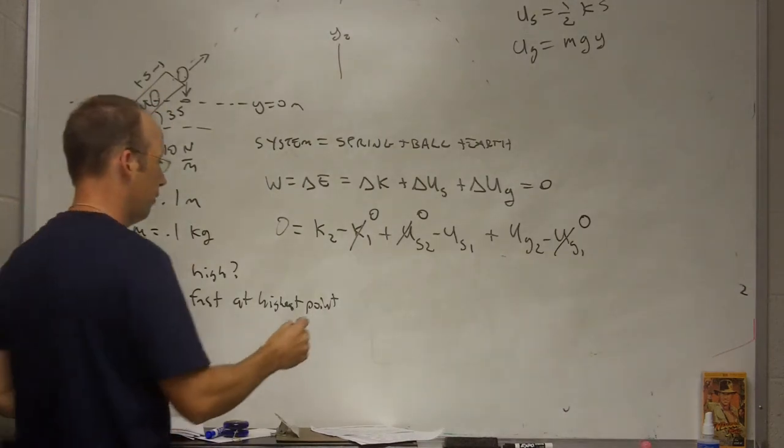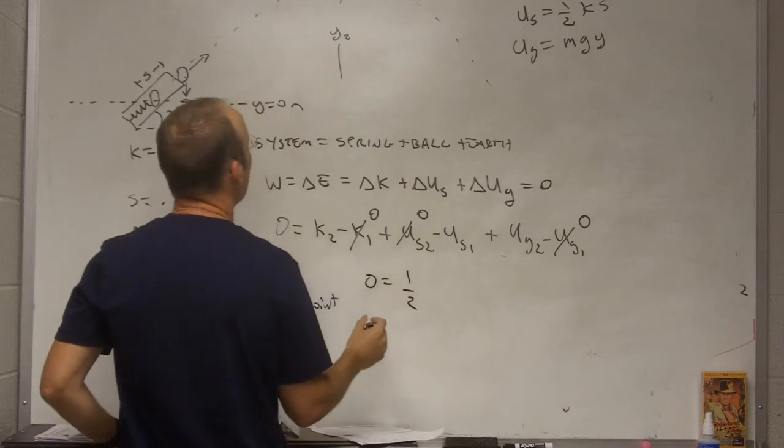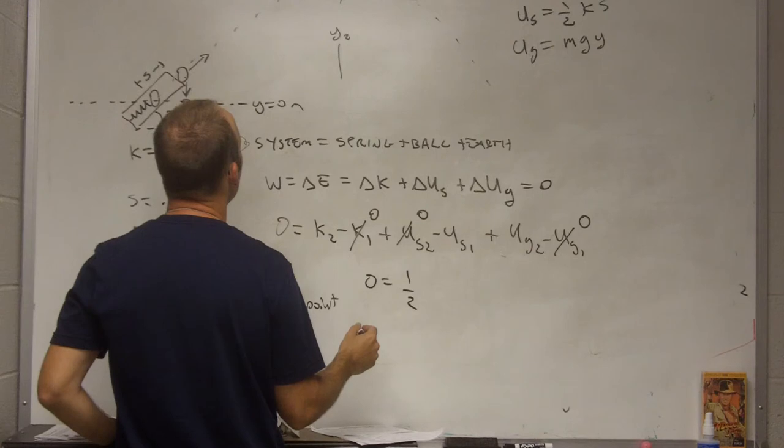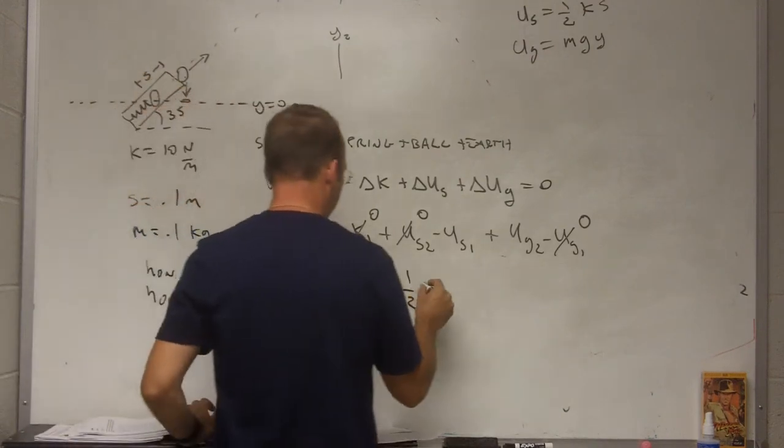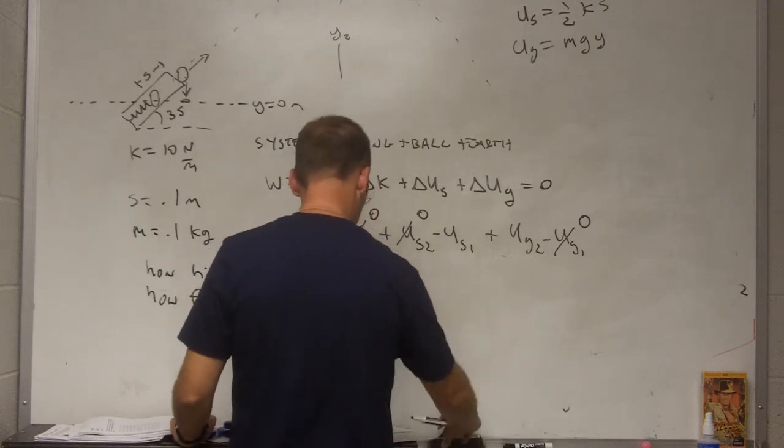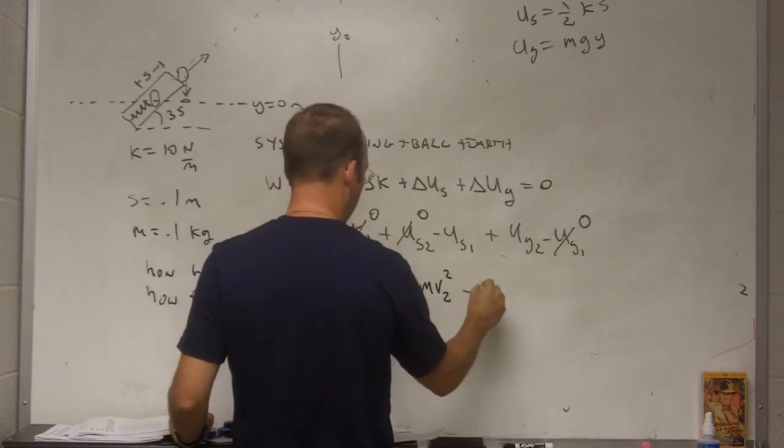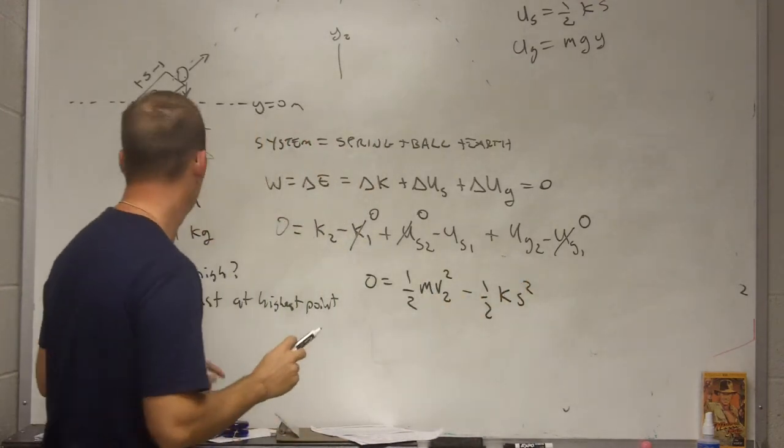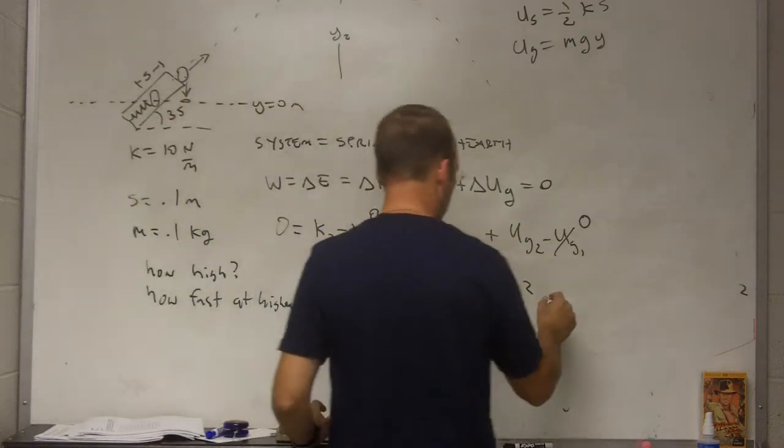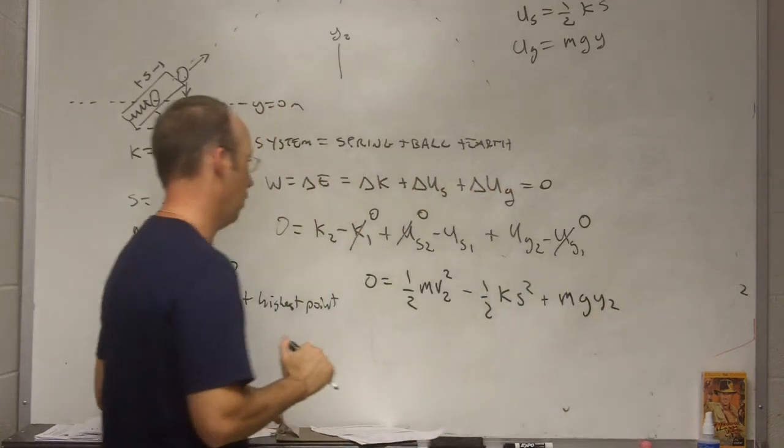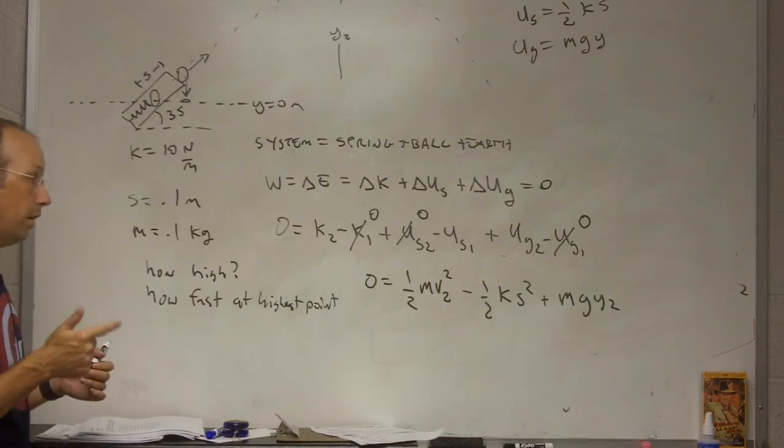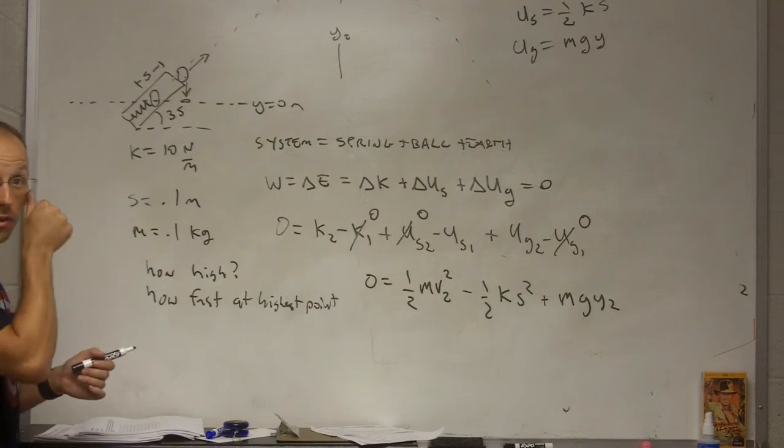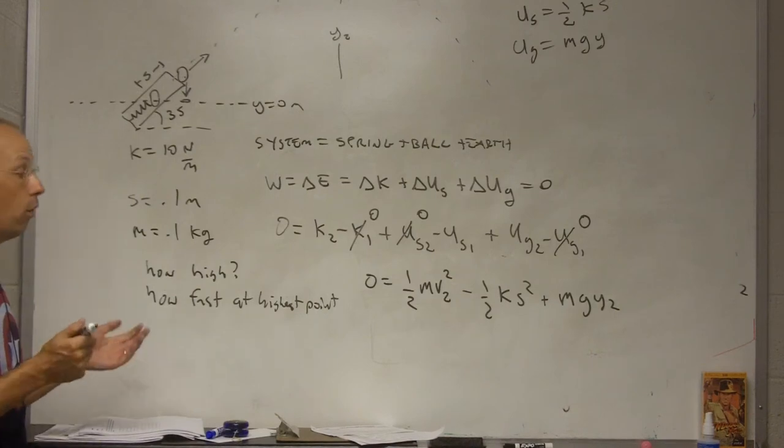So, it doesn't look so bad anymore. I only have three terms. So, I have zero equals one half. I made a trick. I tricked myself. Let me just write it down anyway. One half mv squared minus one half k s squared, where s is the amount of stretch, and this k is little k for the spring constant. And then, plus mgy2. Okay. So, I made a little mistake here because I'm in trouble. Because I know k, I know s, I know g, I know m. I don't know v2 and I don't know y2.